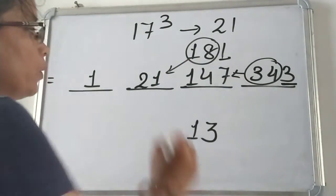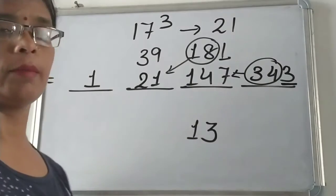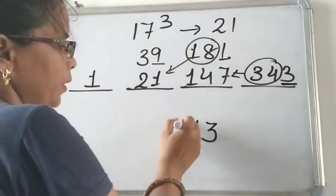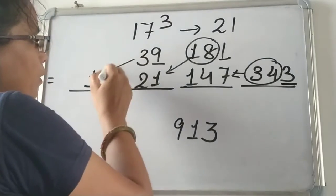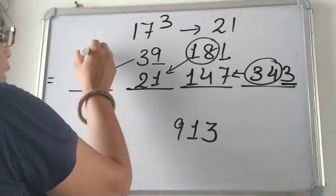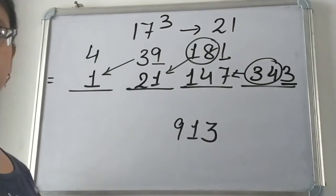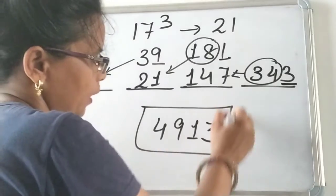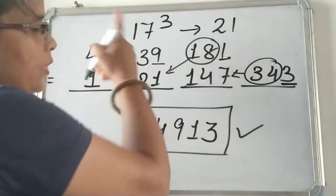And here now we get 39 by this addition and this unit digit 9 will be here. And 3 again, we get 4 and we will write this 4 here. And this is the cube of 17.